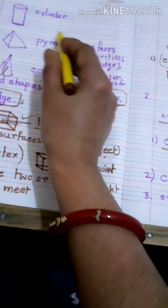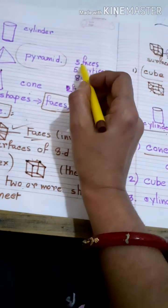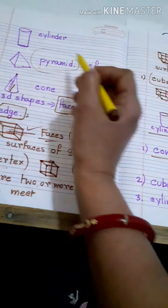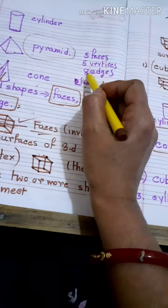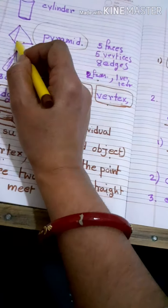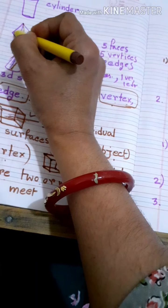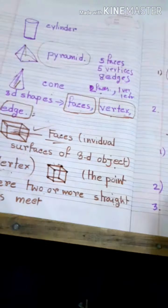This is the pyramid shape. A pyramid has five faces, five vertices, and eight edges.